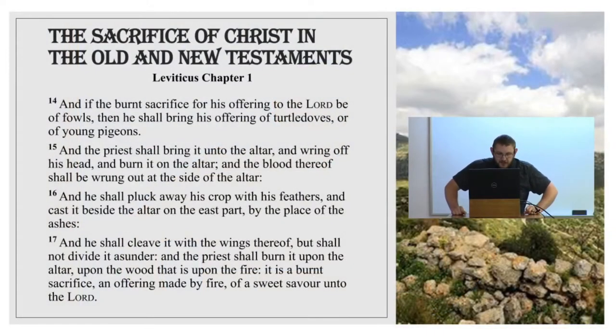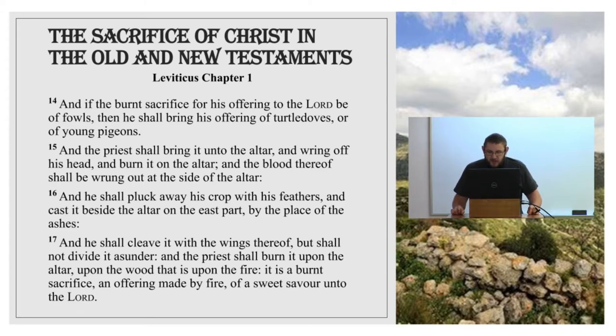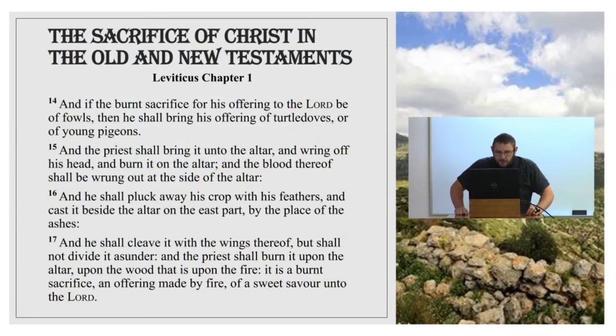In verse 15, the sacrifice was prepared a little differently. 'The priest shall bring it unto the altar and wring off his head, and burn it on the altar, and the blood thereof shall be wrung out at the side of the altar. He shall pluck away his crop with his feathers and cast it beside the altar on the east part, by the place of the ashes.' The crop is where the bird stores food for digestion - it's really the equivalent of the innards mentioned in the previous sacrifices. The bird was de-feathered, just as the others were skinned. In verse 17, 'You shall cleave it with the wings thereof but shall not divide it asunder, and the priest shall burn it upon the altar - an offering made by fire, a sweet savor unto the Lord.'